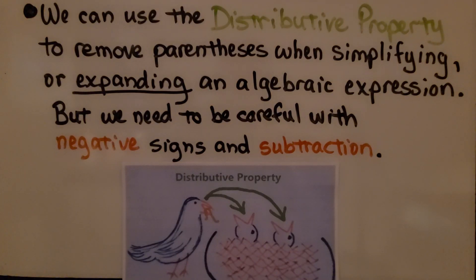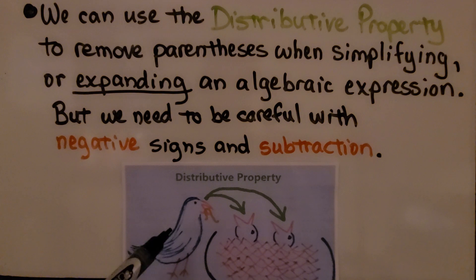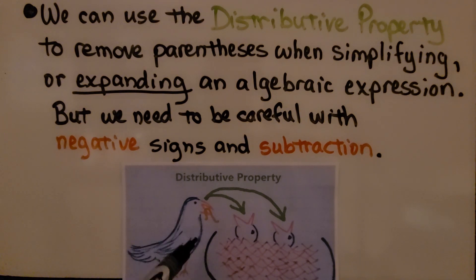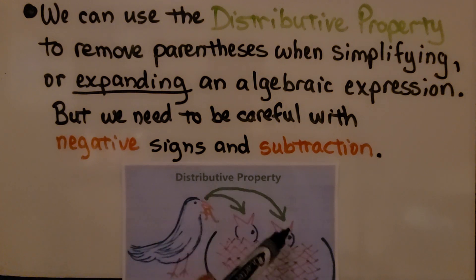We can use the distributive property to remove parentheses when simplifying or expanding an algebraic expression, but we need to be careful with negative signs and subtraction. The distributive property — I've always taught that it's like a mother bird feeding her babies in a parentheses nest. She feeds one, she feeds the other, each gets a turn, no one's ignored.